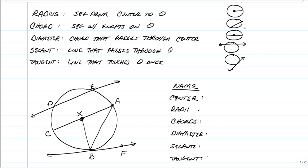A secant is a line that passes through the circle and touches it twice, going all the way through it and continuing outside. A tangent is a line that touches the circle just once.